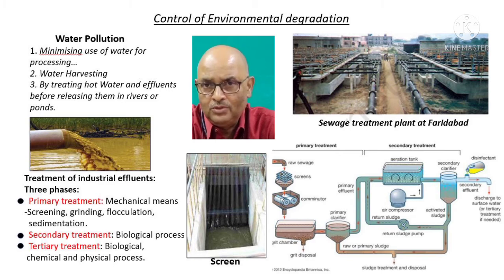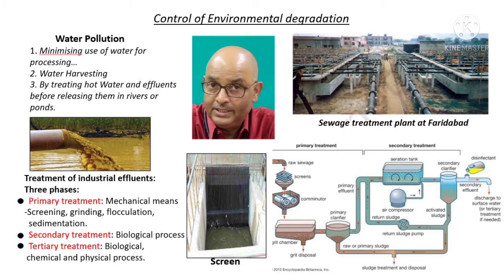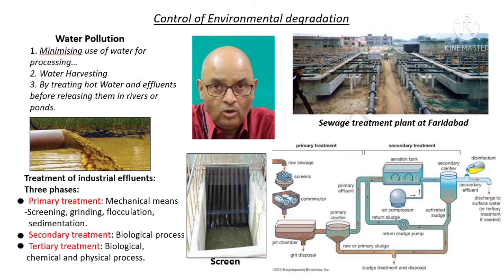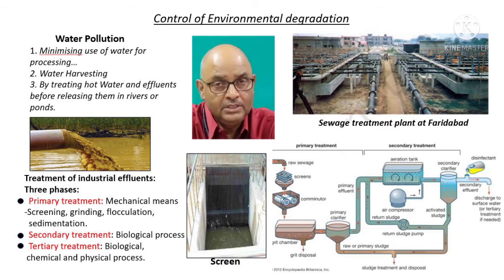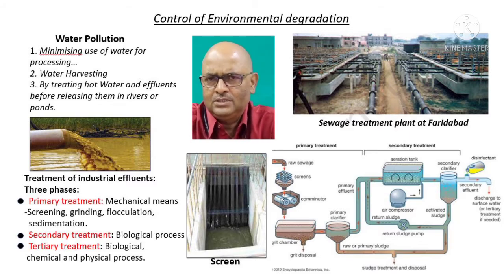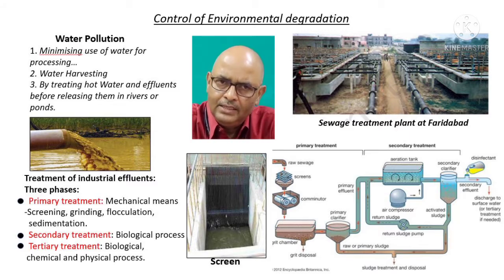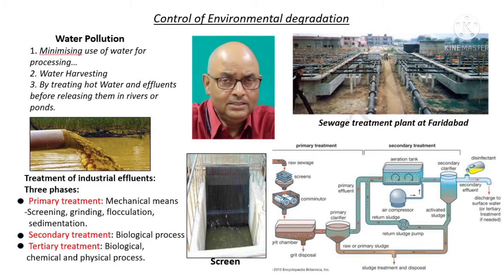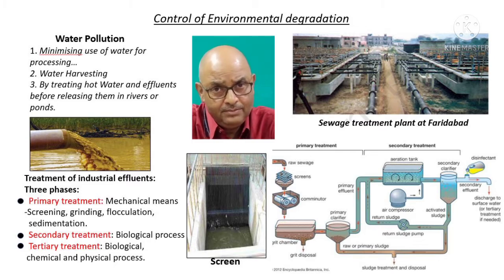Thirdly, industrial pollution of fresh water resources can be reduced by treating wastewater, hot water, and effluents before releasing them into rivers and ponds. Treatment of industrial effluents can be done in three phases: primary treatment, secondary treatment, and tertiary treatment.